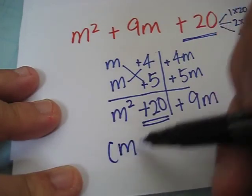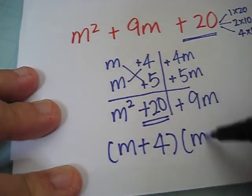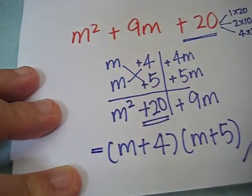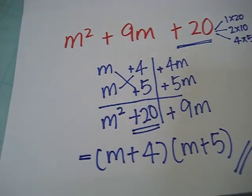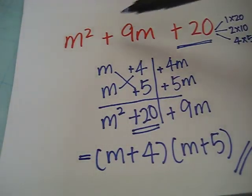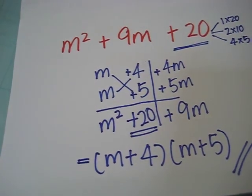Therefore, the two factors are (m + 4) and (m + 5). To check, we can expand this and we should get back m squared plus 9m plus 20.